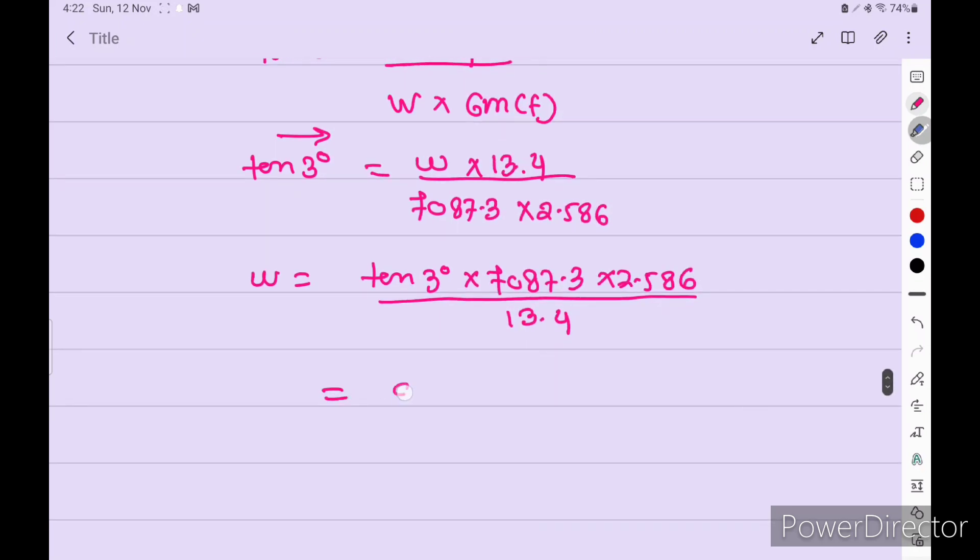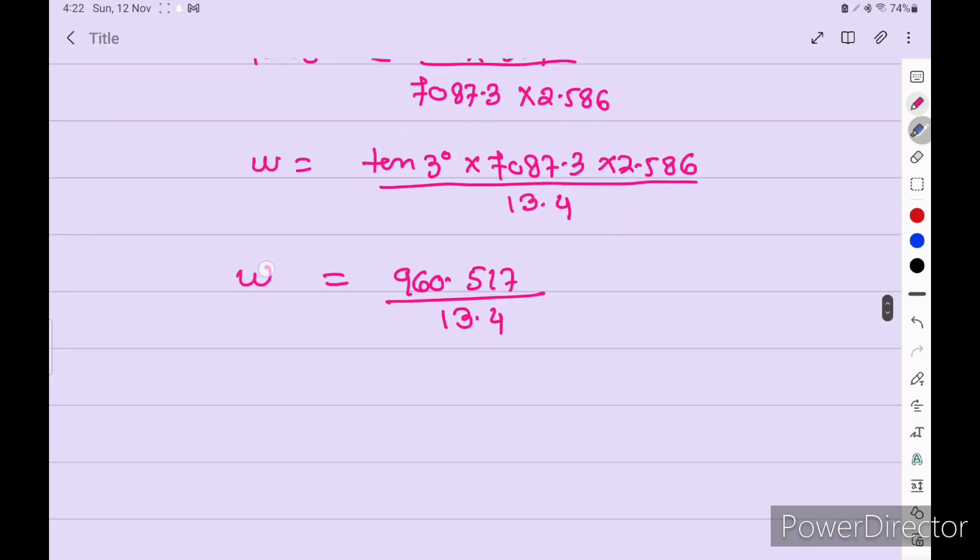This equals 960.517 divided by 13.4, so w equals 71.68 tons to shift from starboard to port for upright the vessel.